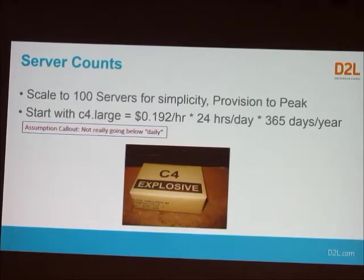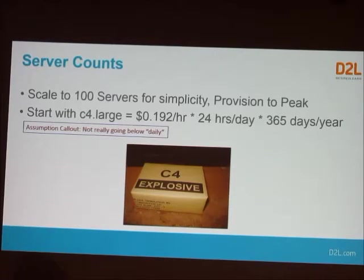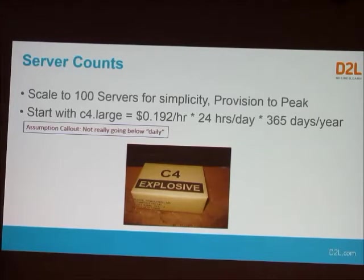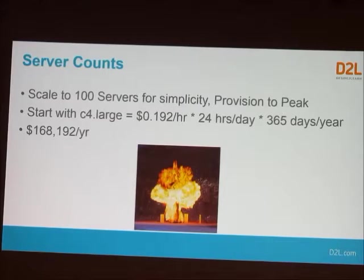AWS actually bills hourly. Google bills by the minute, which reminds me of old cell phone fights over per-minute versus per-second billing. AWS is the mean one — not only do they bill hourly, but if you turn off and turn on an instance, it charges you again for that hour. We discovered this in an unfortunate way because we had rapid off-ons in dev cycles. If you turn it off and on 17 times in an hour, you pay for 17 hours. When you stop and start an instance, you're paying for the hourly. A C4 large at 19.2 cents an hour, 24 hours a day, 365 days a year, comes to $168,192 for 100 servers for one year.